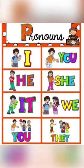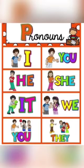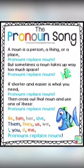These pronouns are used in a sentence in place of nouns. I, he, she, and it are used for singular nouns. We and they are used for plural nouns. The word 'you' is used for both singular and plural nouns. Now children, I want you all to read this pronoun song.